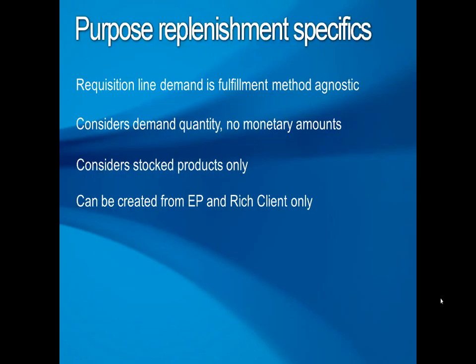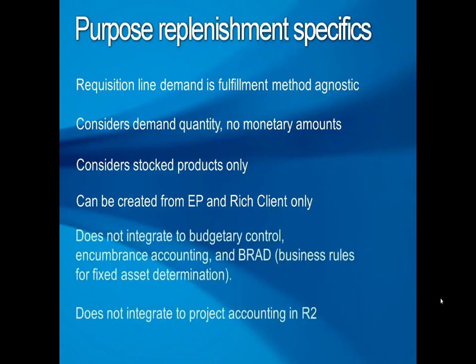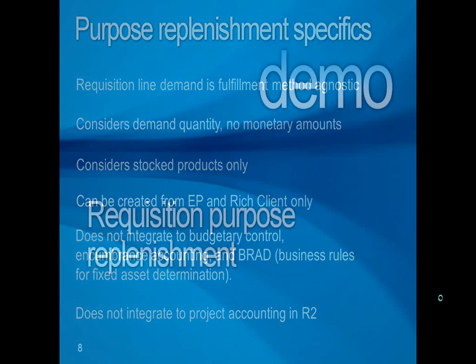Preserve means that the AX 2012 RTM purchase requisition functionality and scenario support is preserved. This functionality integrates with project accounting, budgetary control, encumbrance accounting with pre-encumbrance at the time of purchase requisitioning, business rules for fixed asset determination (SPRAD), not-stocked products and procurement categories, external catalogs through punch-out, and procurement catalogs. The RTM model is a push model where the purchase requisition creates a purchase order line with always a one-to-one relationship.